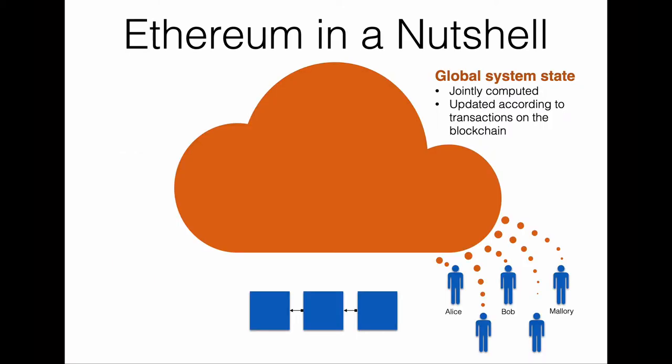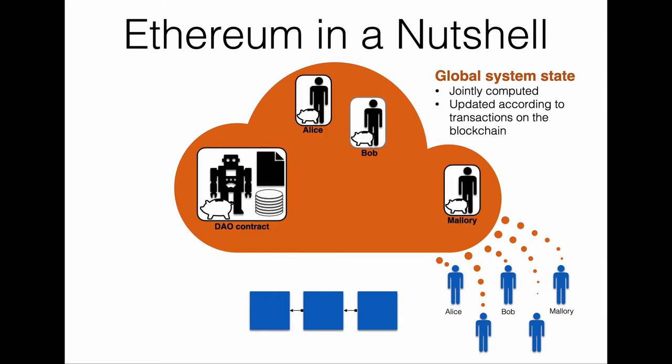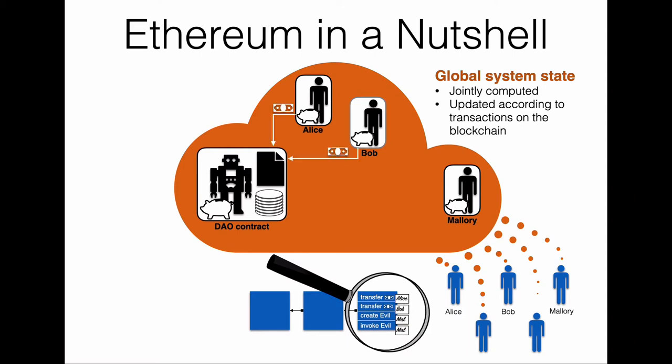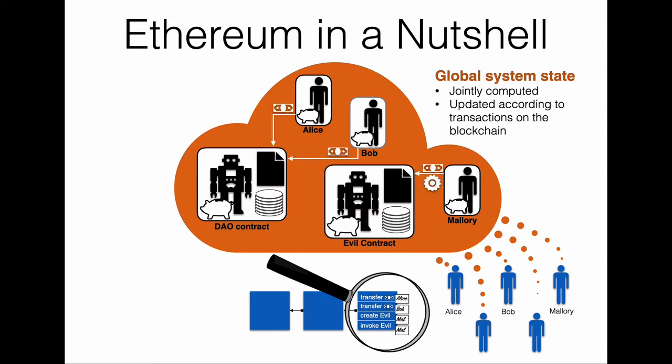To understand the challenges when designing a static analyzer for Ethereum smart contracts, we need to consider how Ethereum works. Network participants jointly maintain an append-only data structure — the blockchain — from which they compute the global system state. This state consists of user accounts controlled by users and contract accounts controlled by code. The global state is updated according to transactions appended to the blockchain, such as money transfers, creation of new contract accounts, and invocation of existing contracts. When a contract is invoked, its code is executed, and this execution can trigger further interactions with other contracts.